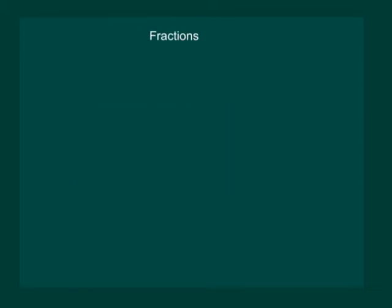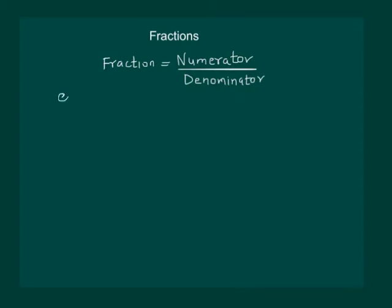Let us revise fractions as done by us in the previous classes. We know fractions as numbers of the form numerator by denominator. For example, 2 by 3 is a fraction, 5 by 7 is a fraction, 4 by 8 is another fraction, and 6 by 3 is also a fraction.